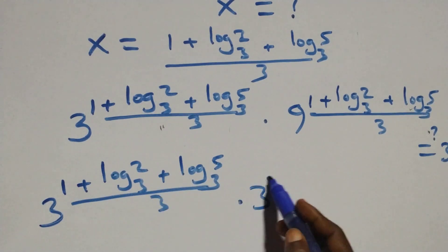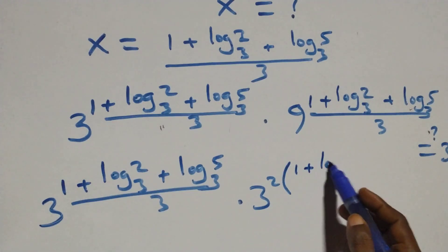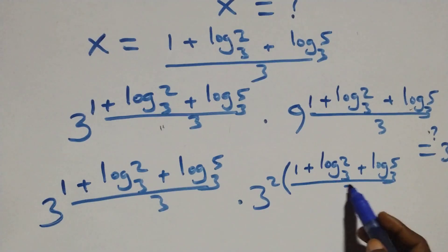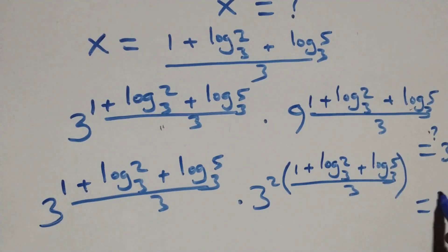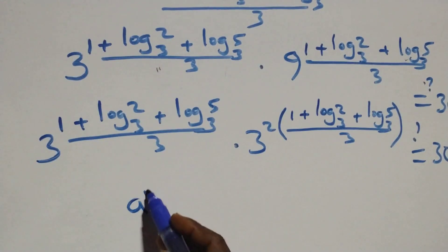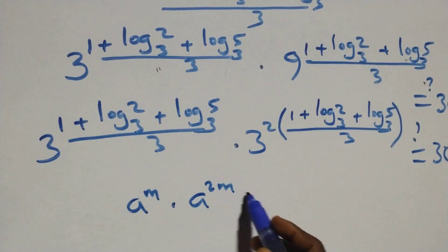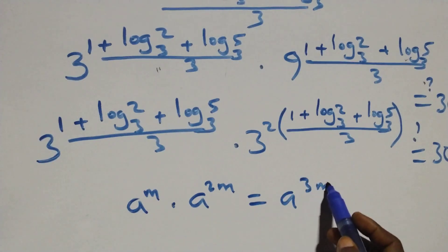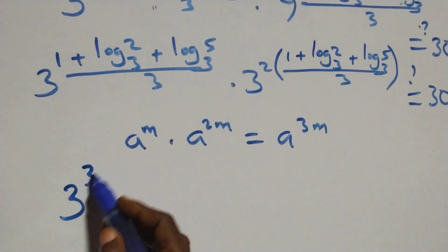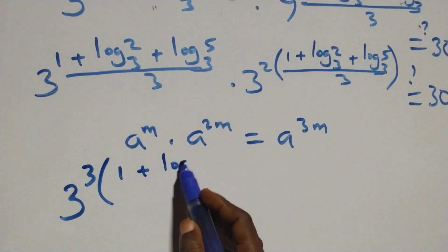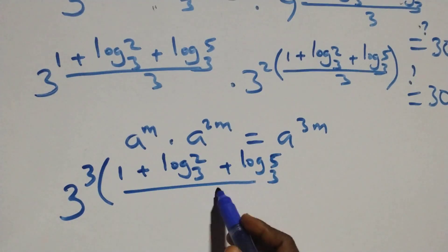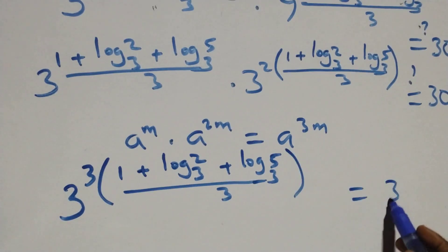This is equal to 30 on the right side. We write 9 as 3 squared, so this becomes 3 squared raised to power (1 plus log₃2 plus log₃5) over 3. Using the rule a raised to power m times a raised to power 2m equals a raised to power 3m, we can write this as 3 raised to power 3 times (1 plus log₃2 plus log₃5) over 3.